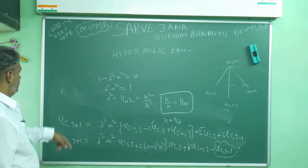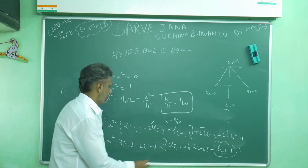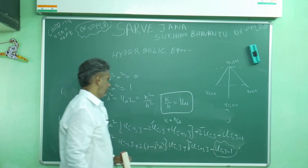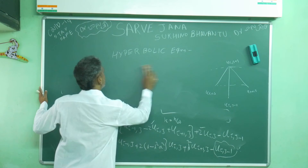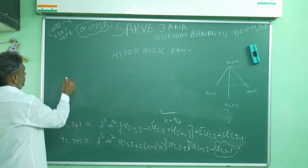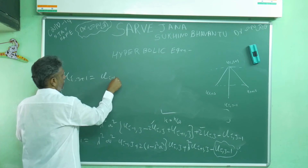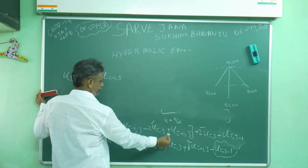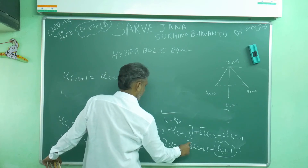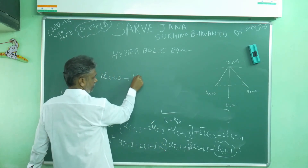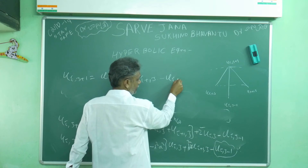Substituting λ²a² = 1 into the formula, the middle term vanishes. The simplified finite difference scheme becomes: u(i,j+1) = u(i-1,j) + u(i+1,j) - u(i,j-1).